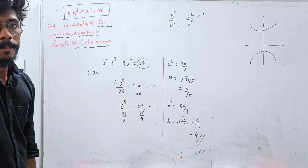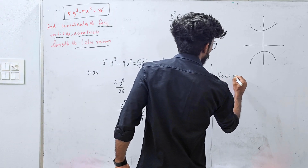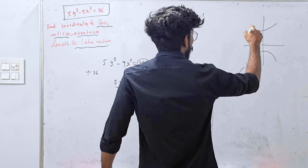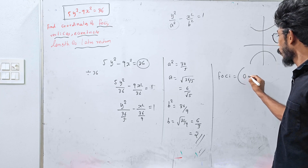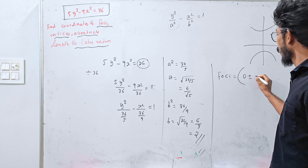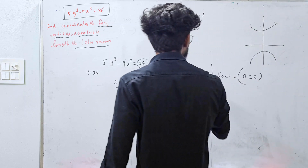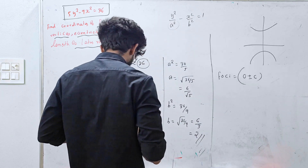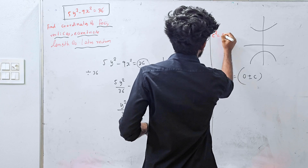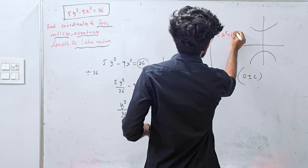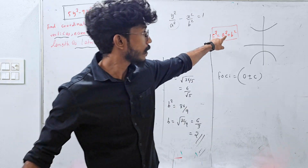Now we have a² and b². That is the foci. Hyperbola foci are on the y-axis: (0, ±c). We need to find c. The formula for hyperbola is c² = a² + b². For an ellipse it is minus, but for hyperbola it is plus.